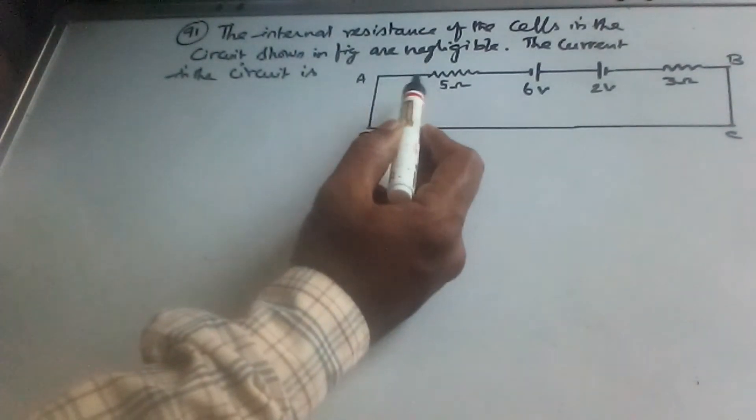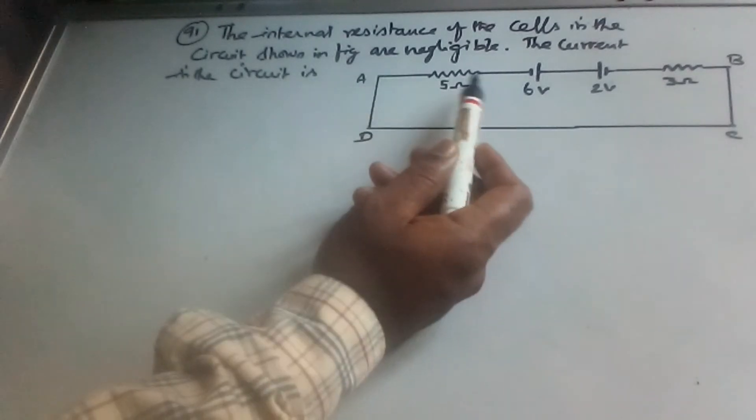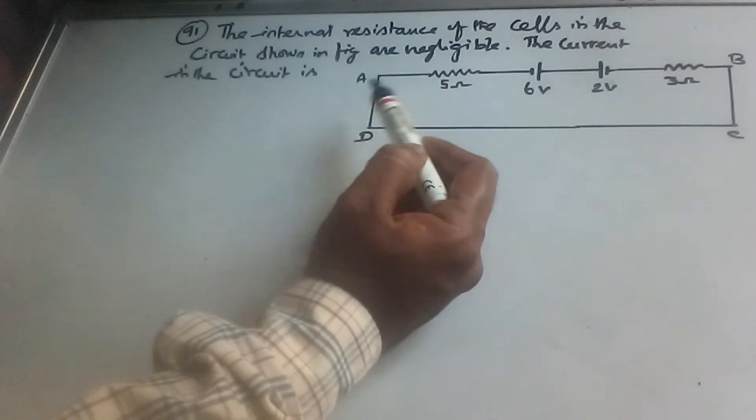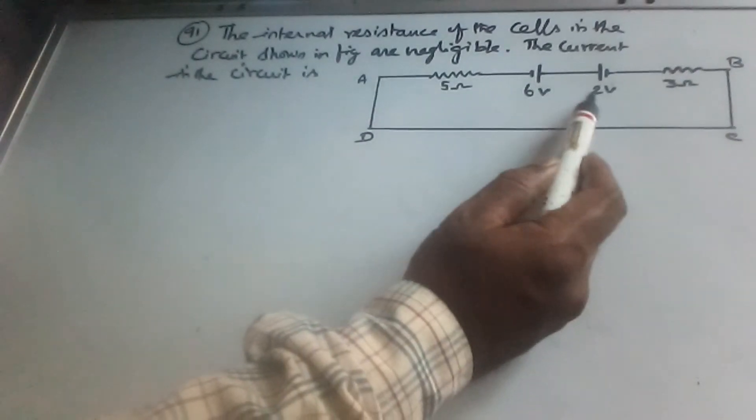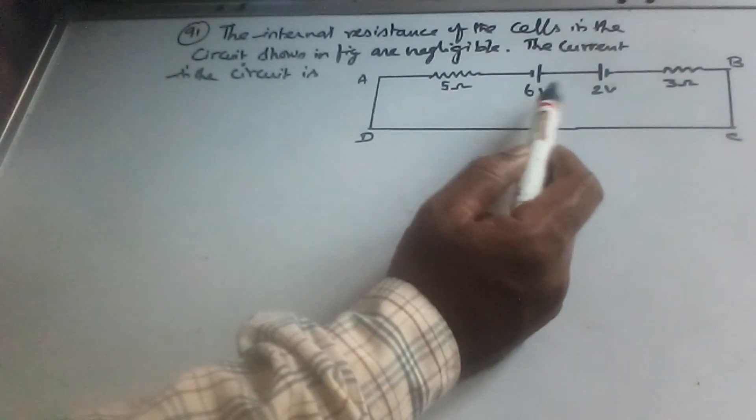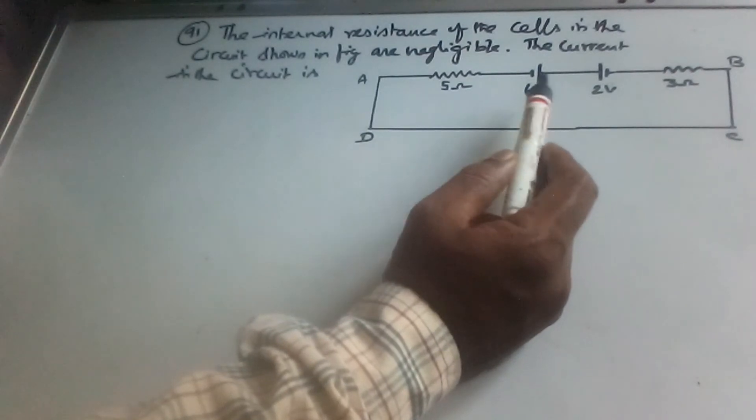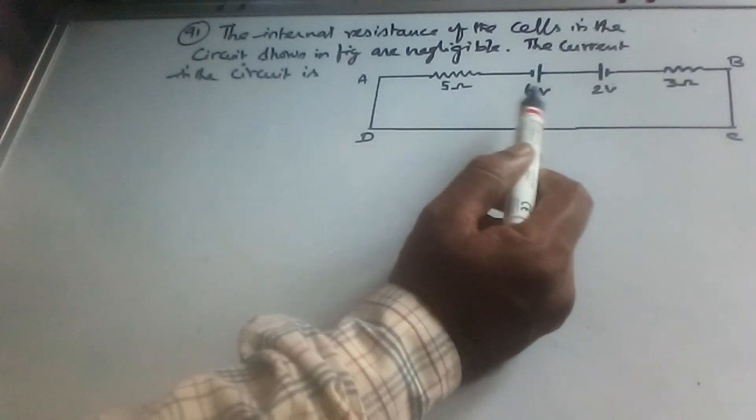The internal resistance of the cells in the circuit shown in the figure are negligible. We have a 6V and 2V cell. You have to find the current in the circuit.